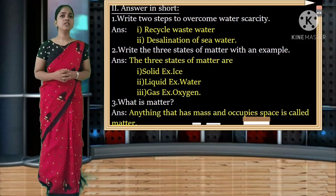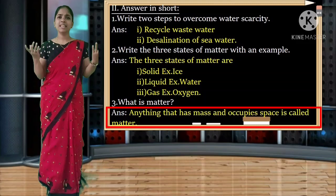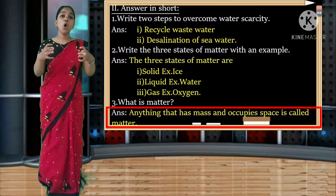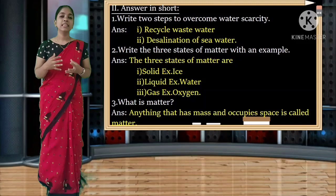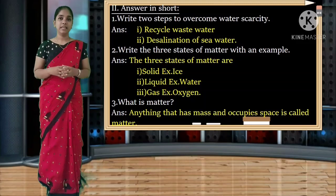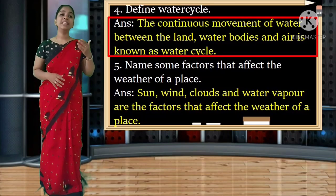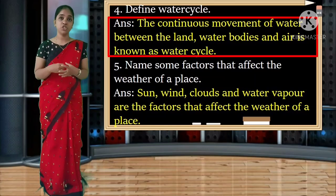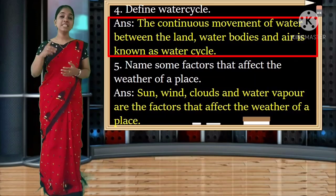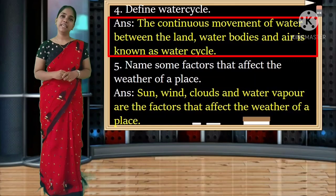Third: what is matter? Anything that has mass and occupies space is called matter. Spelling of mass: M-A-S-S. Matter: M-A-T-T-E-R. Fourth: define water cycle. The continuous movement of water between the land, water bodies and air is known as water cycle. Spelling: W-A-T-E-R C-Y-C-L-E.